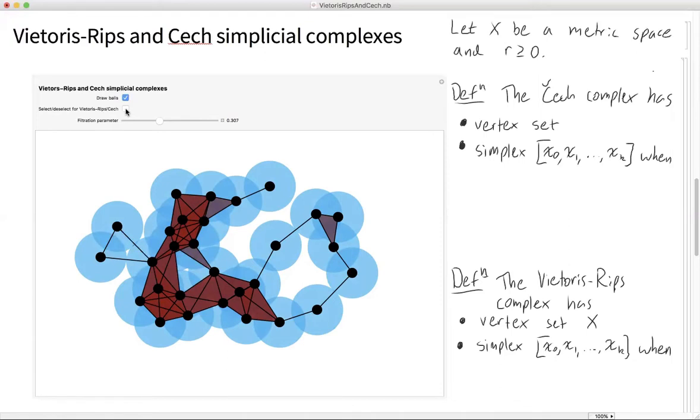And the reason being is that in a Vietoris-Rips complex, whenever you have the three edges of a triangle, you necessarily have that triangle. Whereas in the Čech complex, just having the three edges alone doesn't mean you need to have the triangle. You also need to have a point of triple intersection of the three balls. So since there's no point of triple intersection right here, we don't have this triangle in the Čech complex, nor this one.